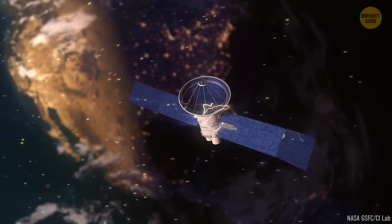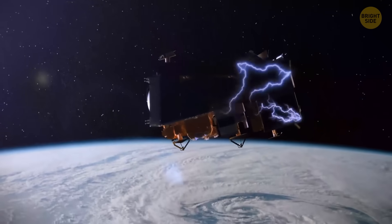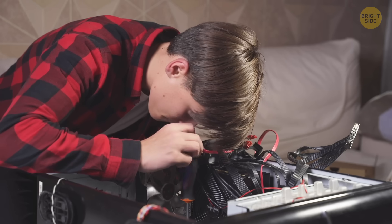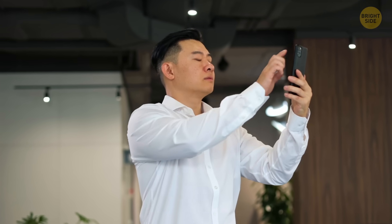That weak spot is bad news for anything flying up there. When satellites travel through it, their systems can freak out. Computers freeze, data gets scrambled, and sometimes entire instruments shut down. Basically, the space version of your phone glitching out right when you need it most.